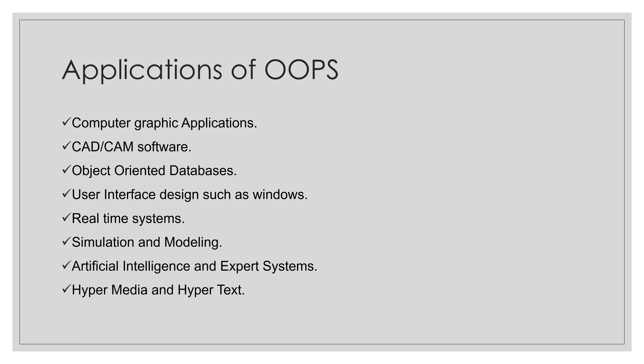OOPs is widely used in several application areas. First, computer graphics — using C++ we can create basic shapes and text with stylish fonts and add colors. Second, CAD/CAM software — OOP is used in manufacturing and design applications to reduce effort and allows designers and engineers to produce flowcharts and blueprints accurately.